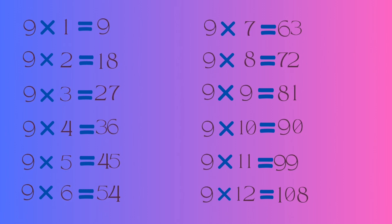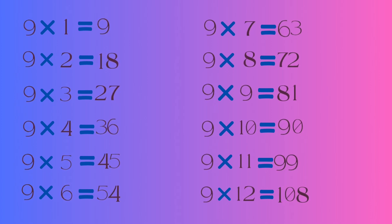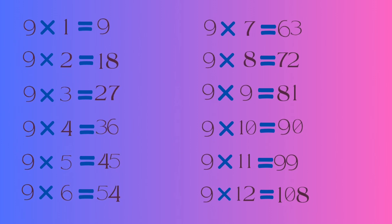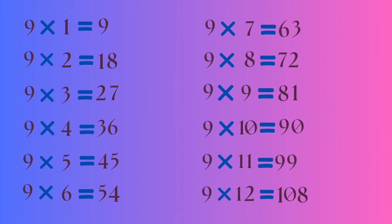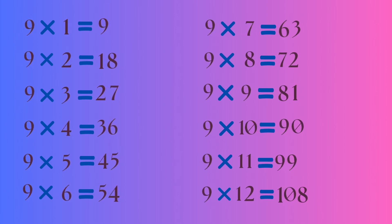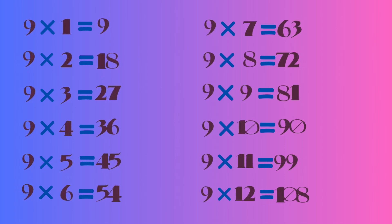9 eights are 72, 9 nines are 81, 9 tens are 90, 9 elevens are 99, 9 twelves are 108.